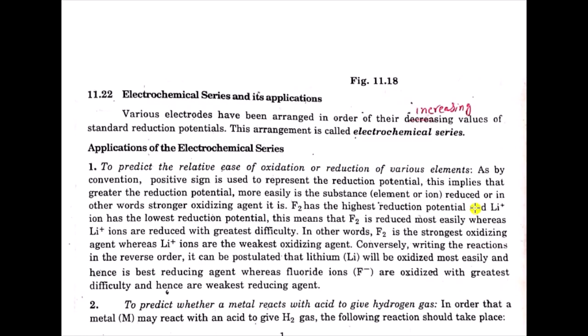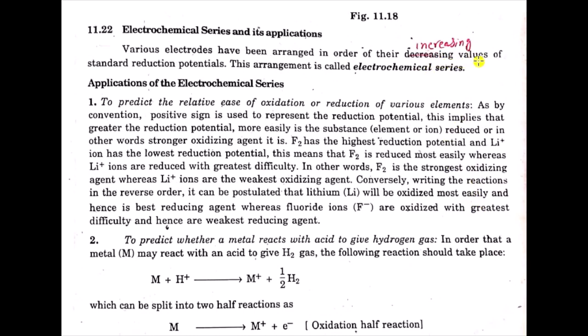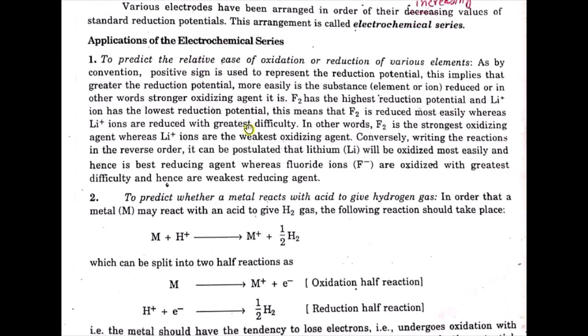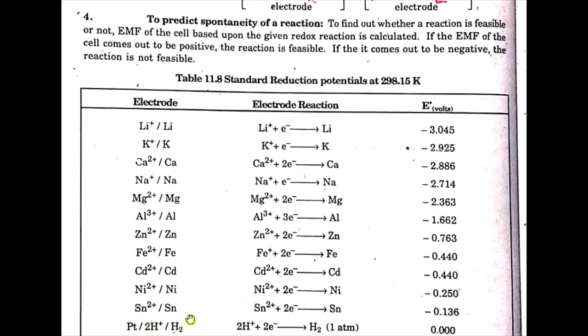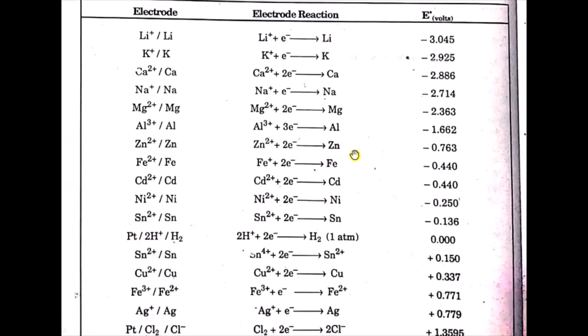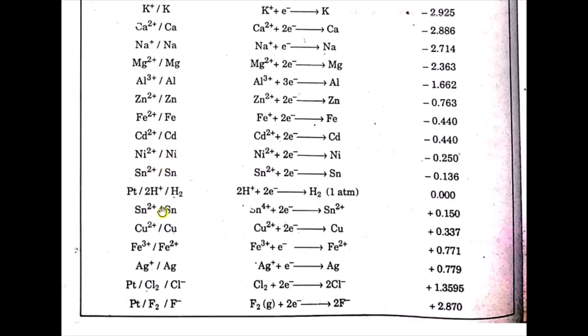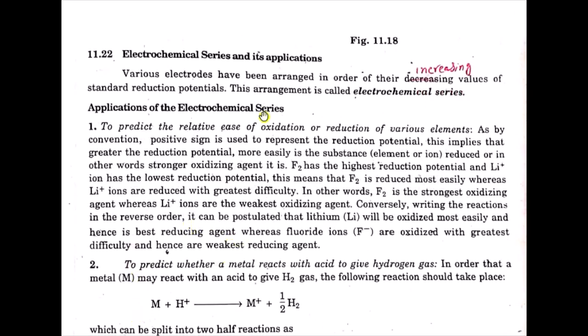This application tells us which elements have a higher reduction potential and which have a higher oxidation potential — that is, which elements easily show reduction and which easily show oxidation. Elements above the hydrogen electrode have a greater tendency to lose electrons and can easily show oxidation, while electrodes below the hydrogen electrode have a greater tendency to gain electrons and easily show reduction.